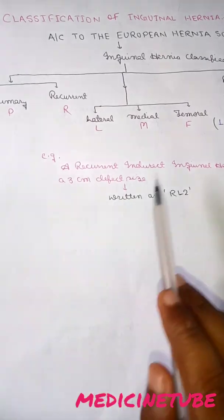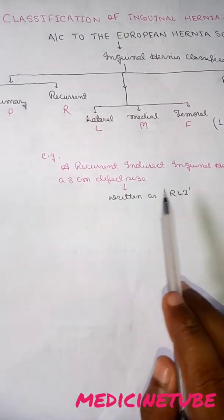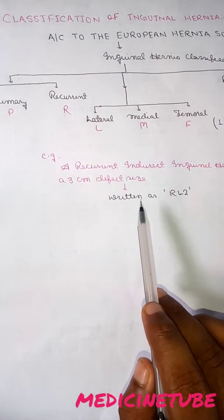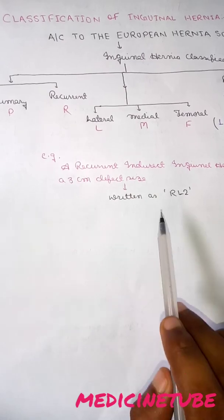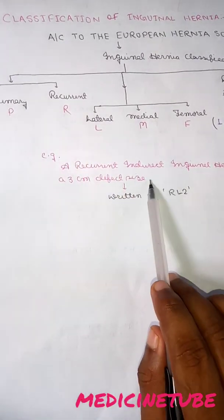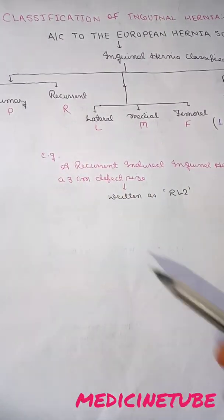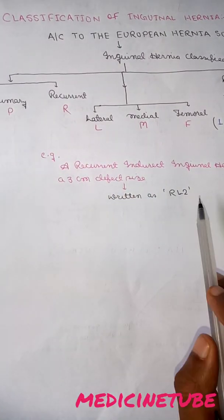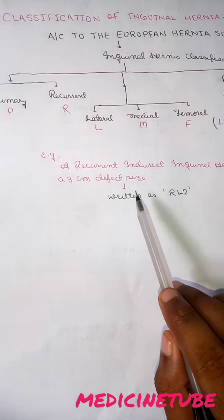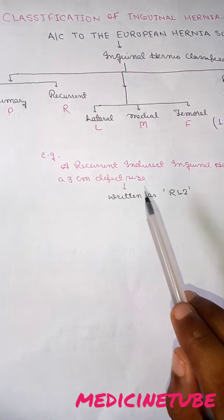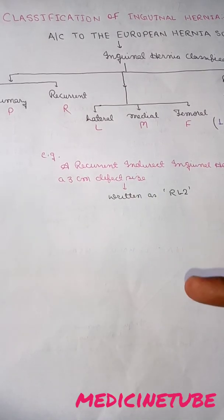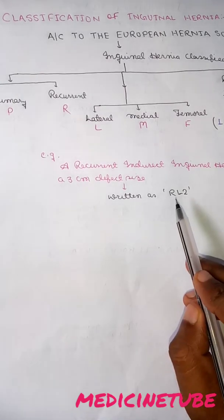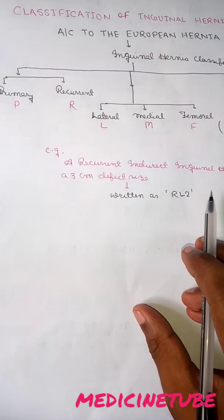For example, a recurrent indirect inguinal hernia with a 3 cm defect size is written as follows: recurrent is denoted by R, indirect means lateral so it is denoted by L, and a defect size of 3 cm equals 2 finger breadths. So it will be written as RL2. Thank you.